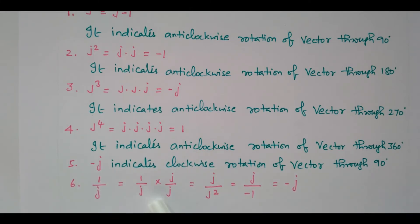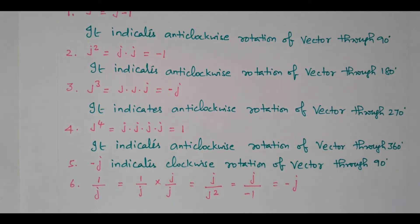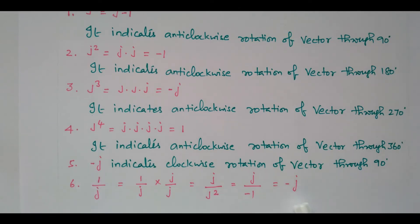With J squared in the denominator. What is J squared? J squared is minus 1. So J divided by minus 1 is nothing but minus J. So we can simply remember: 1 divided by J is nothing but minus J. This is the detail about the J operator: J means anti-clockwise rotation by 90 degrees; J squared, J cubed mean adding 90 degrees; minus J means clockwise rotation; and 1 by J means it is minus J.